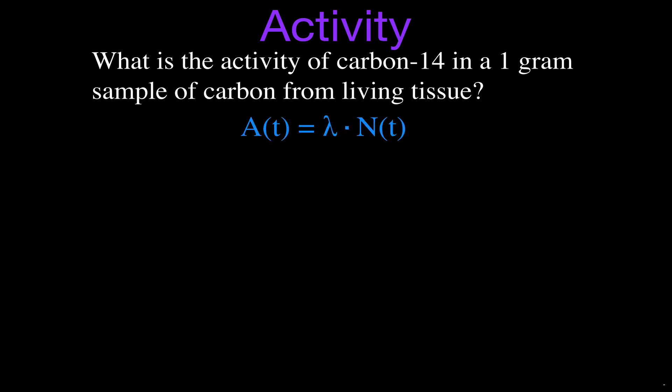This is the equation we're going to use: the activity at some time t is equal to the decay constant — which we'll talk about in a moment — times the number of radioactive atoms, or radioactive nuclei, that you have at that same time t.